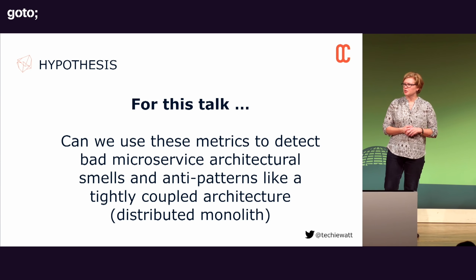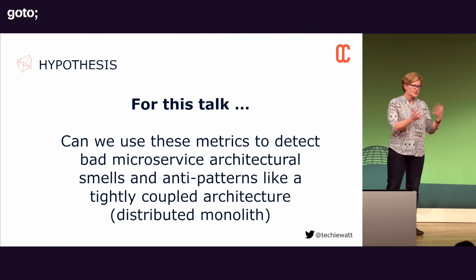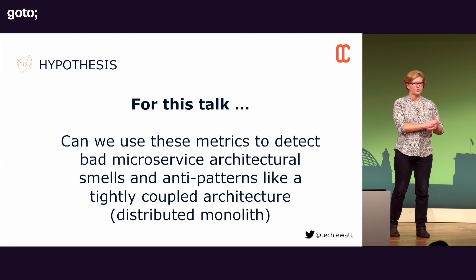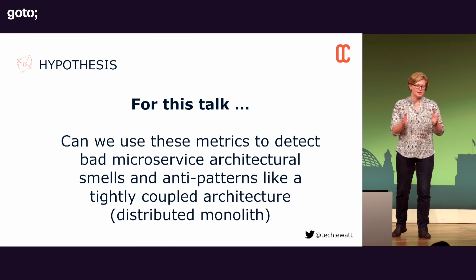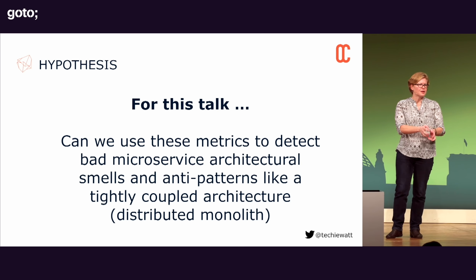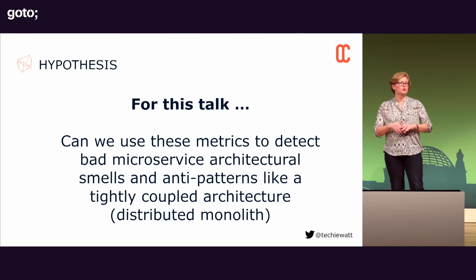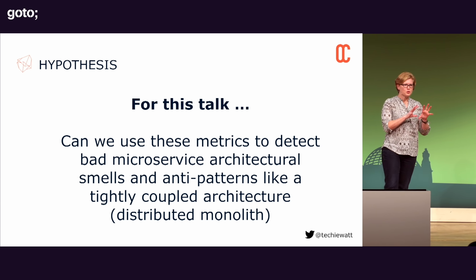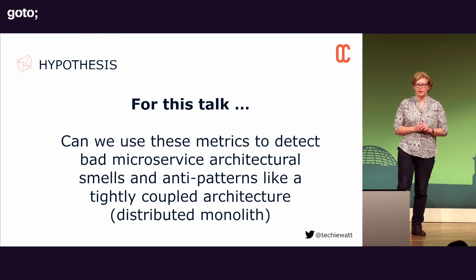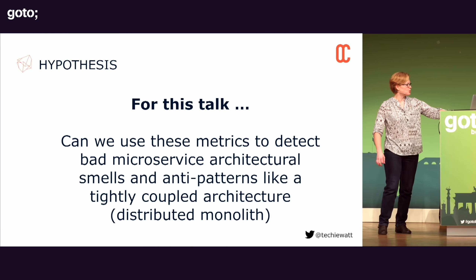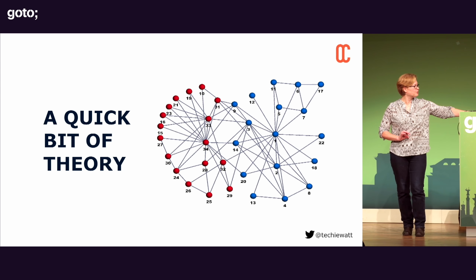A bad architectural smell would be something like a tightly coupled architecture — a distributed monolith. One of the most common culprits we find when we go to clients is a tightly coupled architecture. We sometimes go in right from the beginning and can help steer them in the right direction. But sometimes things have gone a little bit wrong, and we get called in. So we're going to see if we can detect this with some of the properties we're going to look at.